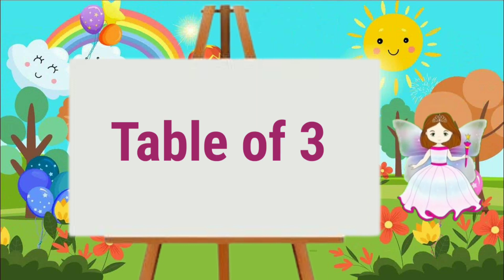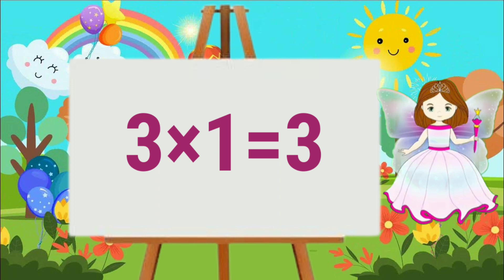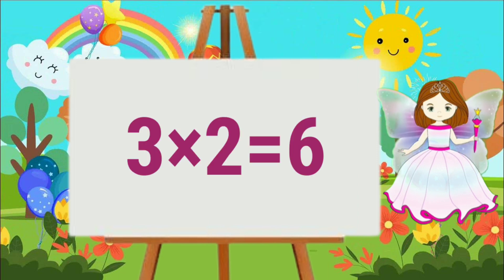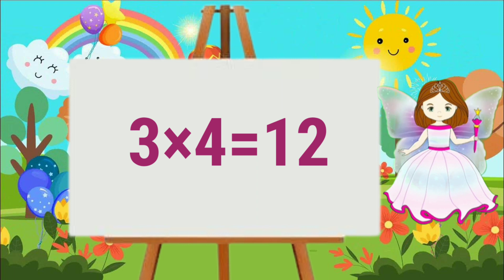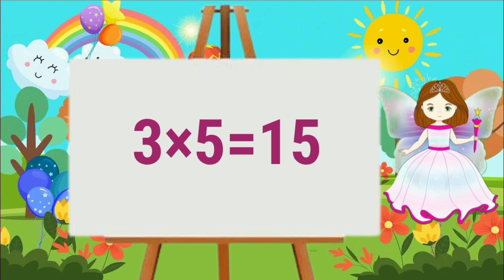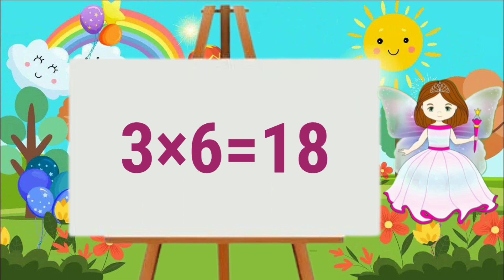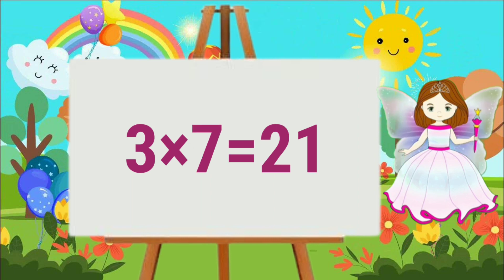Table of Three. Three one's are three. Three two's are six. Three three's are nine. Three four's are twelve. Three five's are fifteen. Three six's are eighteen. Three seven's are twenty-one.